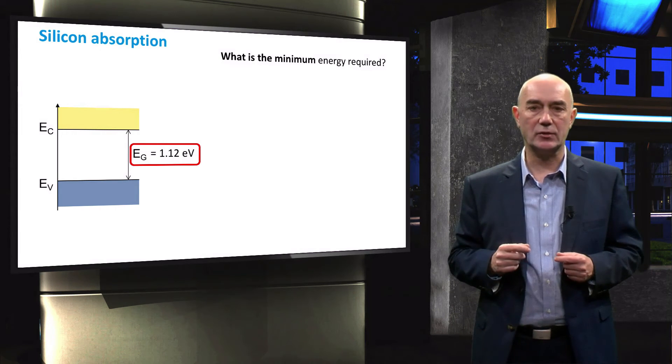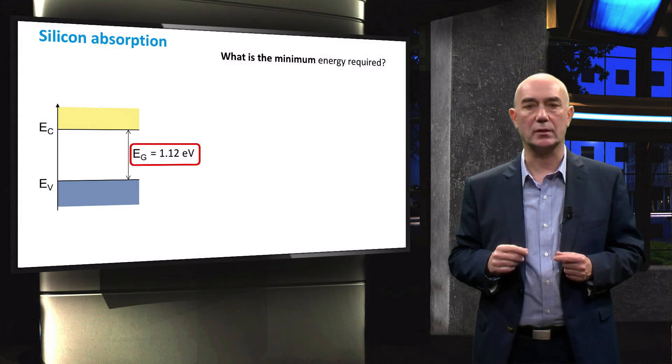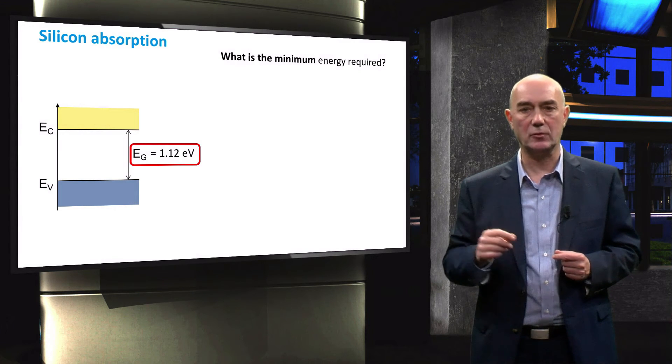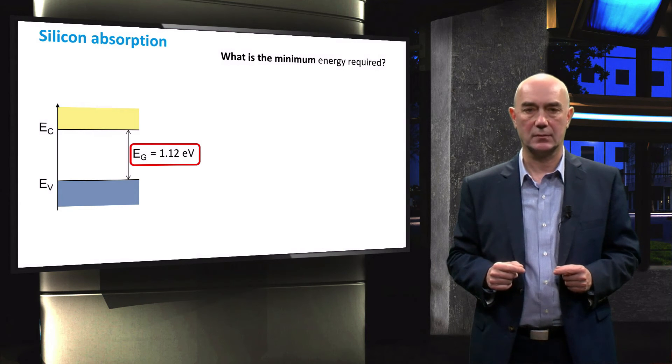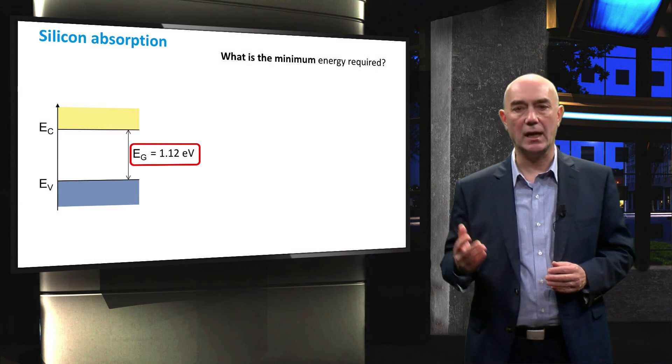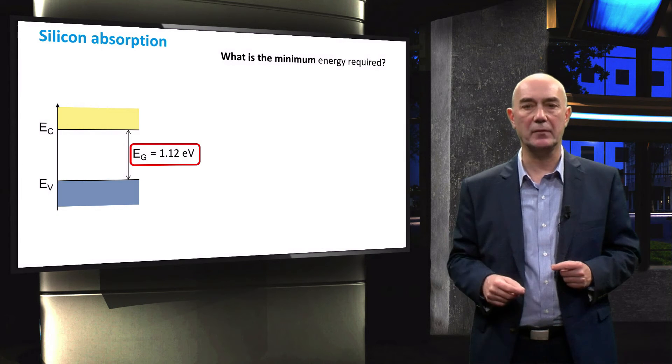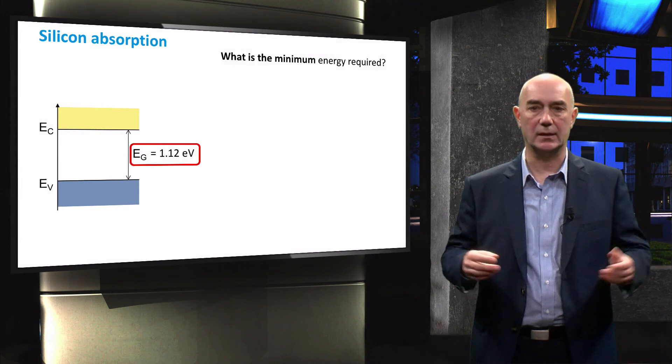We can now apply the relationships we just saw to determine the wavelength of the electromagnetic radiation corresponding to this energy value. Stop the video now and determine the maximum wavelength that can be absorbed by silicon.